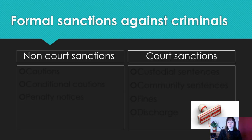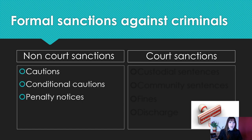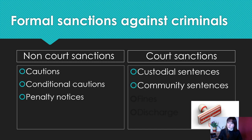You're doing very, very well — there are only a couple more slides. Formal sanctions against criminals. There are two types: formal and informal. Non-court sanctions are: cautions, conditional cautions, and penalty notices. Court sanctions are: custodial sentences, community sentences, fines, and discharge. We're going to have a look at these in a bit more detail.